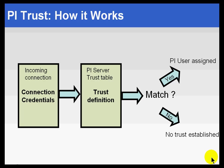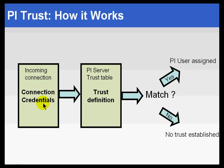Here's how it works. For an incoming connection — it might be a copy of the OPC interface, for example — we derive specific connection credentials from that connection. I'm careful to say we derive them because it's not the client or interface that sends the credentials; it's the server that derives them using, in some cases, reverse name lookup or other networking utilities. We derive a set of connection credentials.